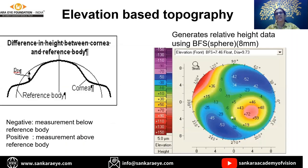Now elevation-based topography has anterior and posterior elevation. Here, a best fit sphere of usually 8 millimeters is taken, and the difference between the patient's cornea and the reference sphere is computed. Anything below the reference body comes in negative values, and anything above comes in positive values. Elevation-based topography is one of the key diagnostic tools for picking up keratoconus, even subclinical.